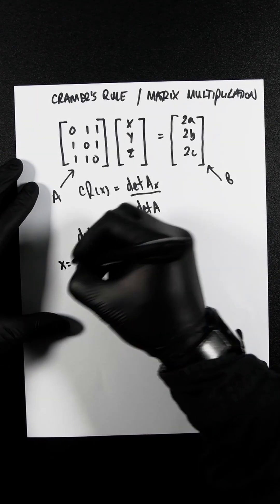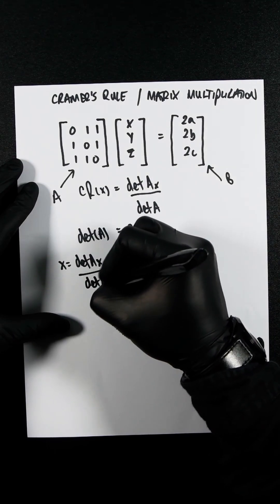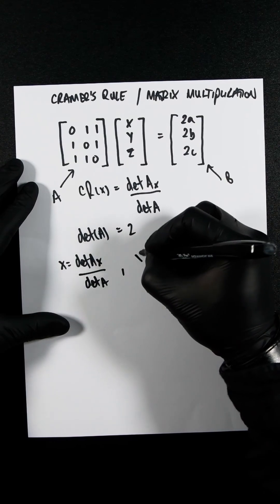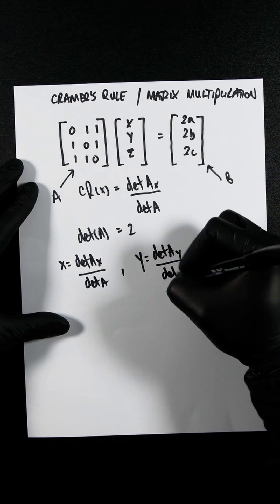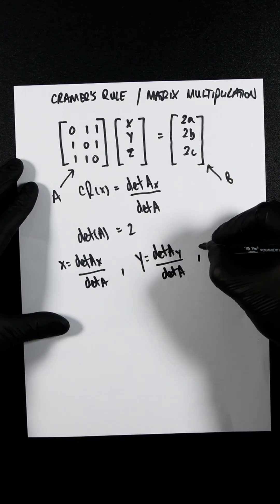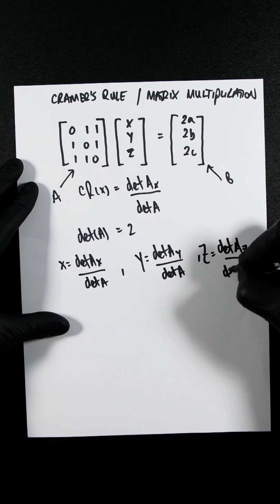So x would be the determinant of Ax over determinant of A. Y would be the determinant of Ay over the determinant of A, and z would be the determinant of Az over the determinant of A.